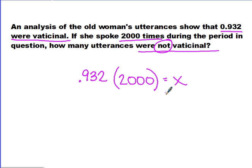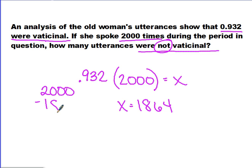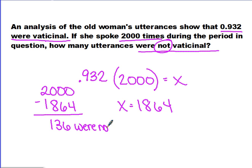We're solving for the number that were not, but to find that we first have to find the number that were. 0.932 times 2,000 equals 1,864 — that is how many were declamatory. To find the number that were not, we do 2,000 minus 1,864, which gives us 136. Make sure you're actually answering what the question is asking. This problem involves an extra step.